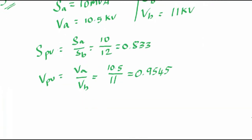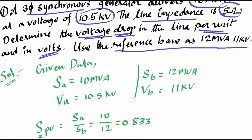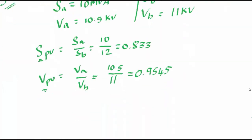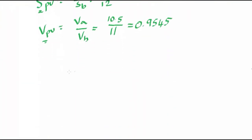Now we are done with the per unit values of power rating and voltage rating. Now we shall find the per unit value of impedance, because the actual value of impedance is given as 5 ohms. The formula for per unit value of impedance is Z per unit = Z_actual divided by Z_base.